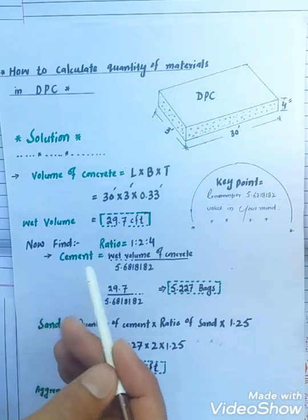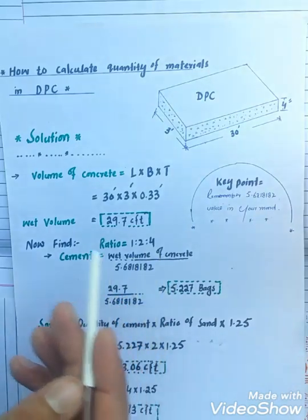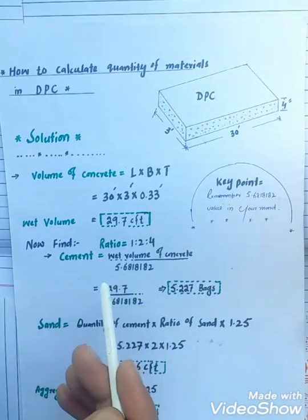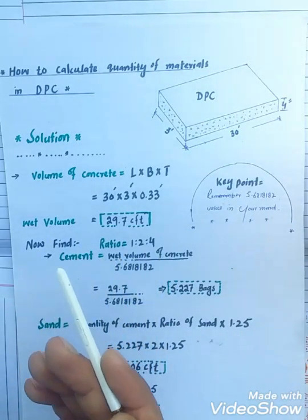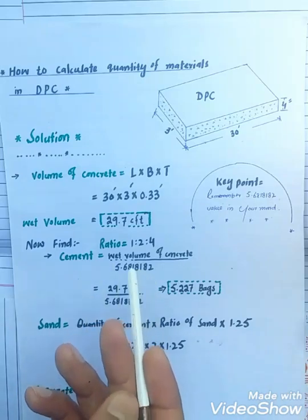For example, ratio is 1 to 4. My dear viewers, one thing you remember in your mind: in this method you don't need to find dry volume of concrete and you don't need to find the sum of ratio.